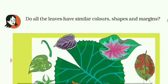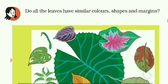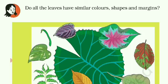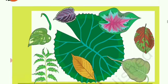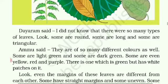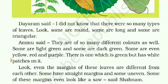Do all the leaves have similar colors, shapes and margins? Kya sabhi pattyon ka color, shapes and margins equal hota hai? Answer is no. Dayaram said, 'I did not know that there were so many types of leaves.' Look — some are round, some are long, some are triangular, or ticoni.